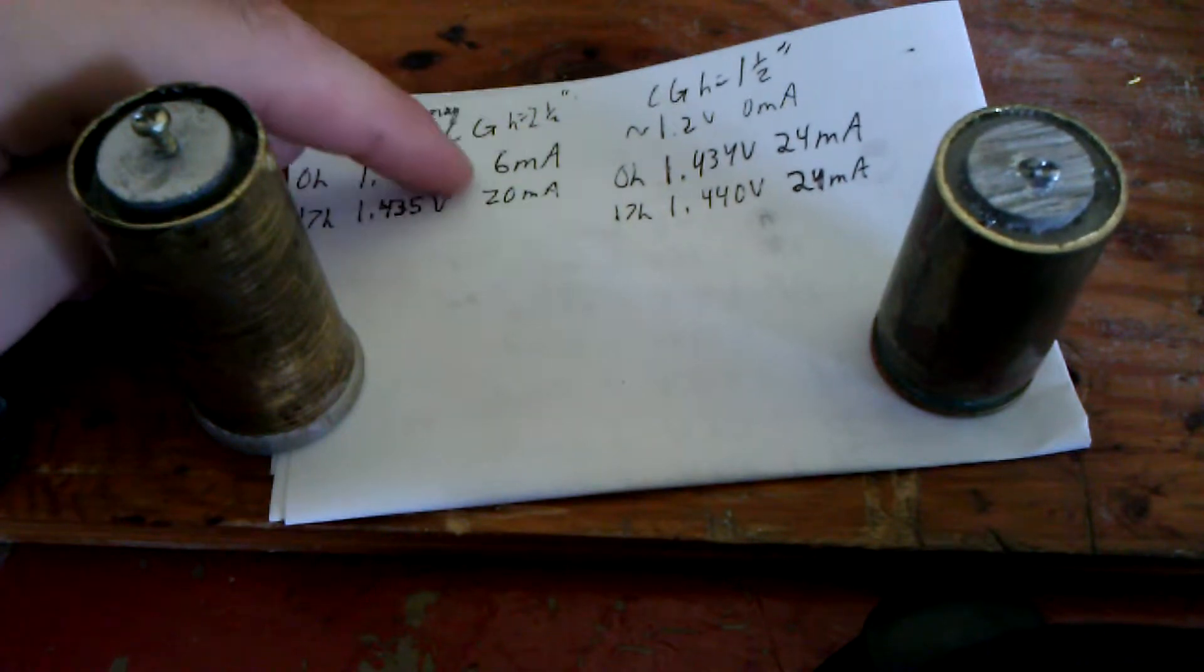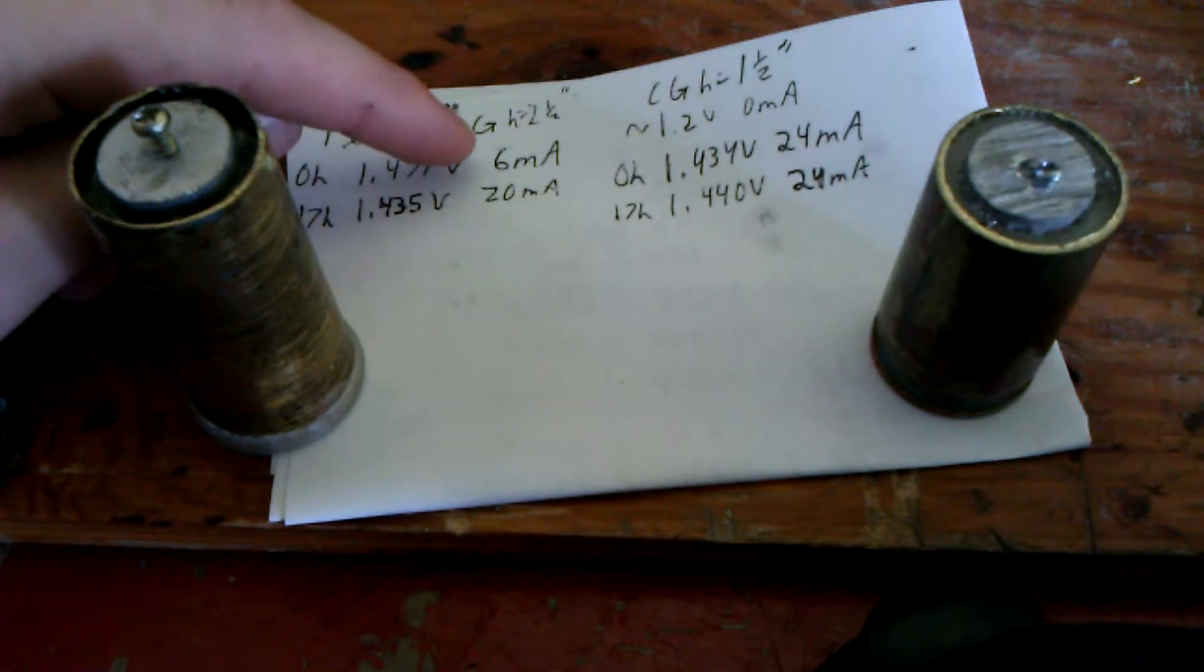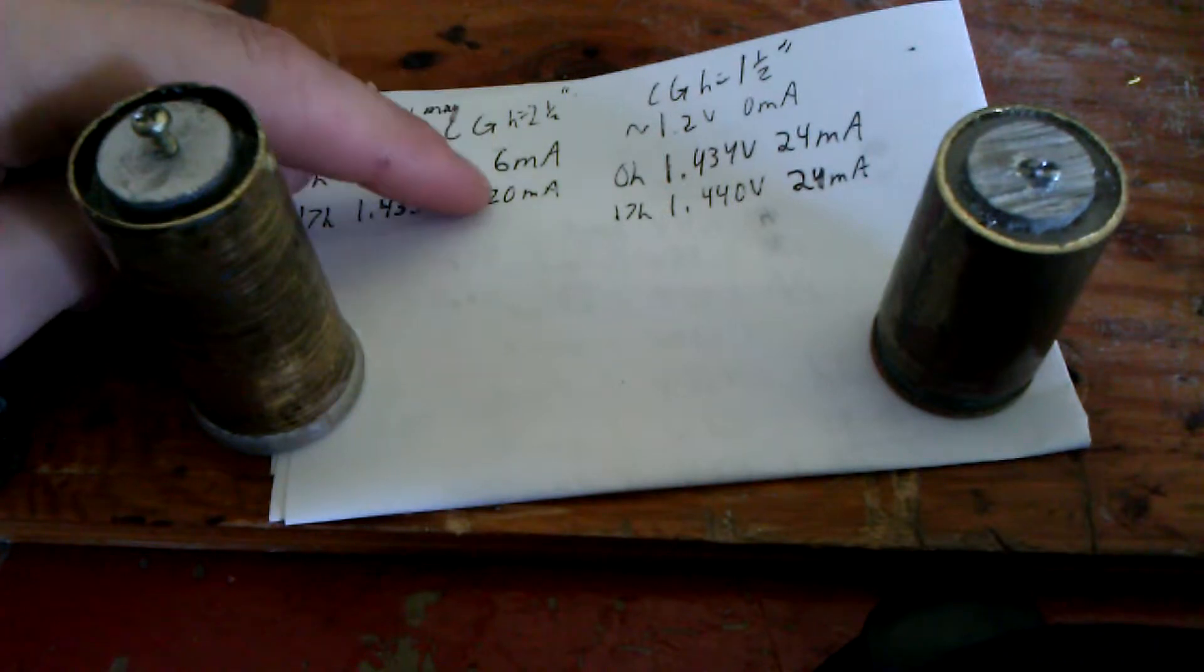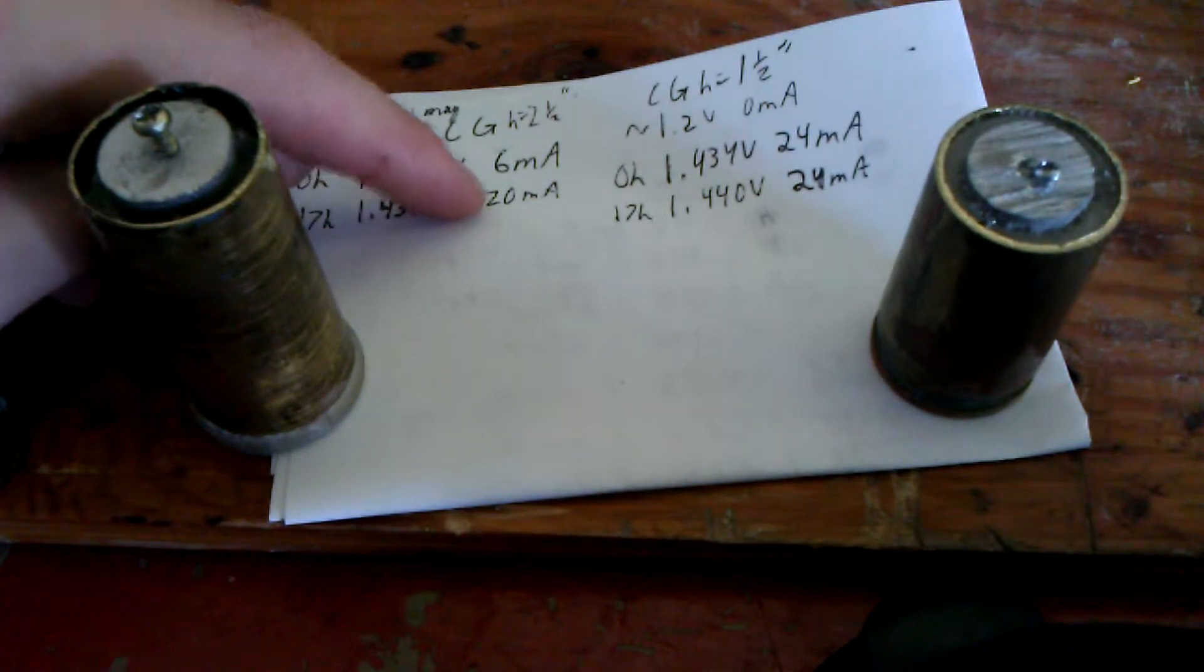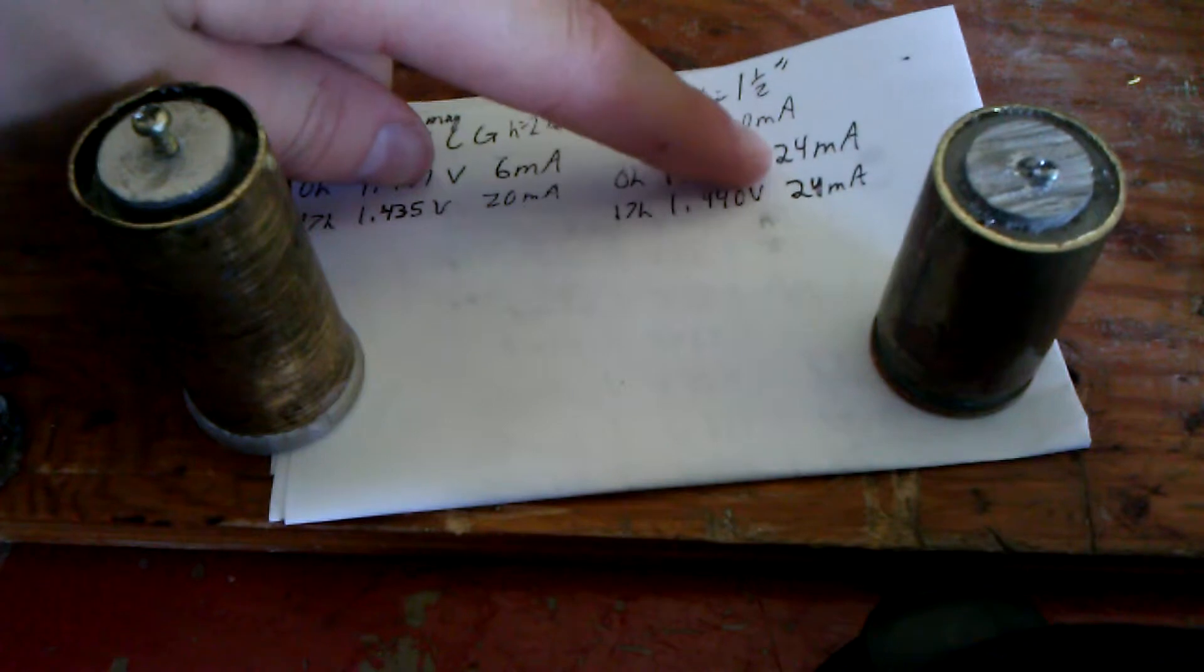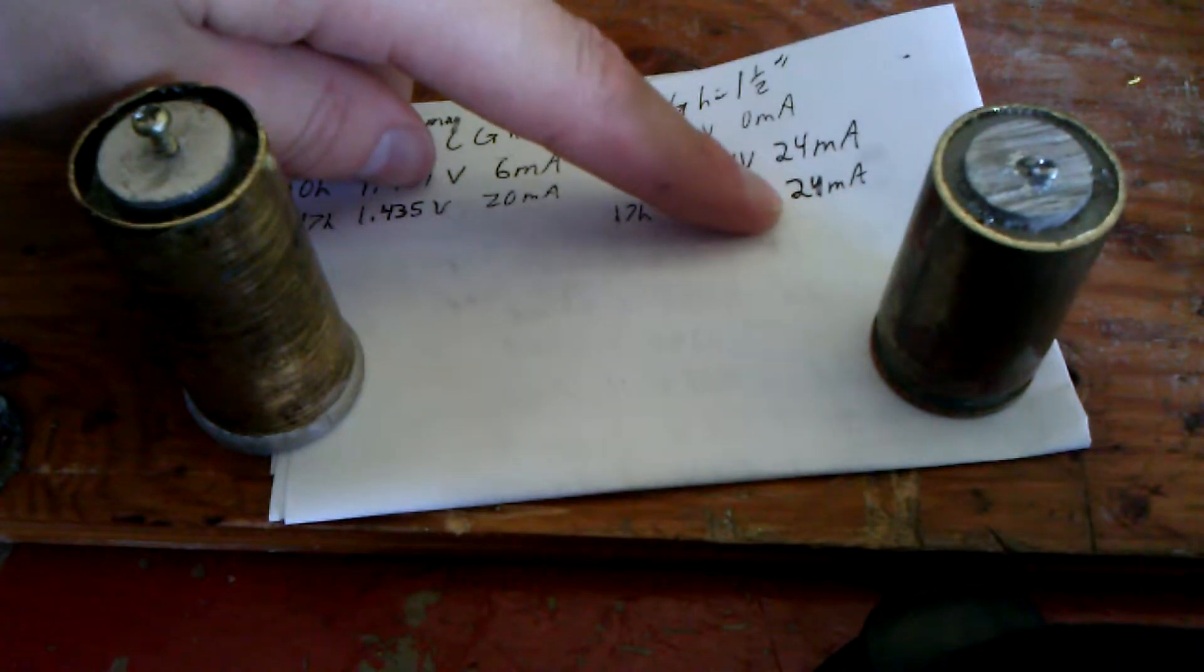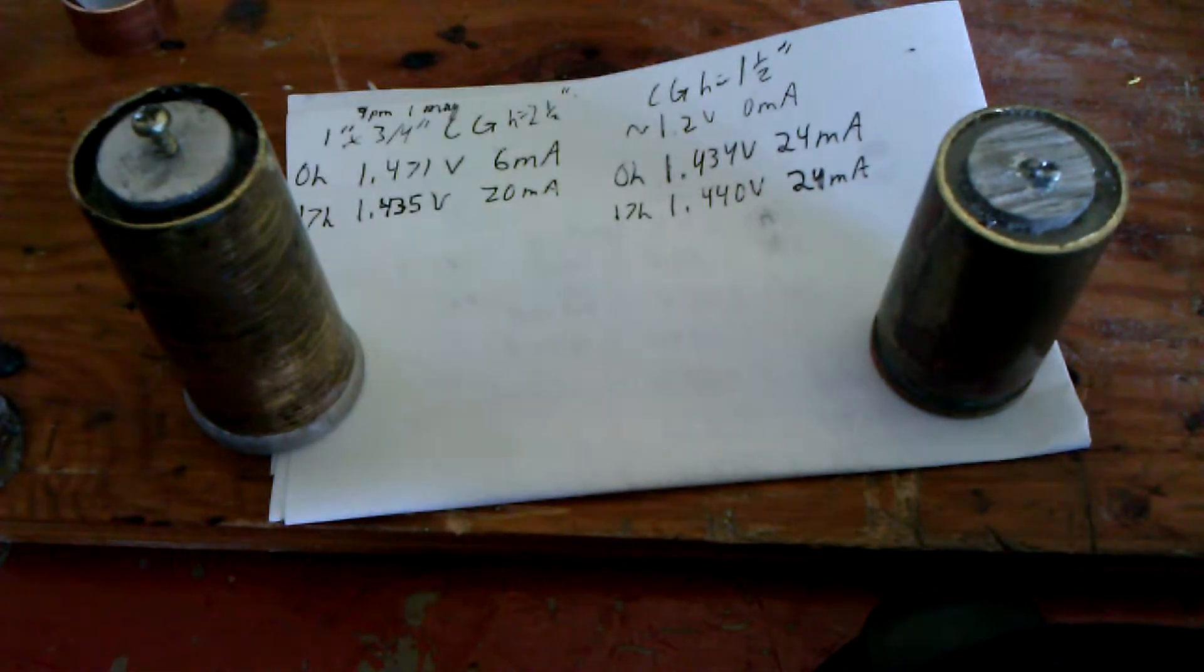Dielectric grease is supposed to hinder it for the first almost 24 hours or so, which it did in this one, and then it jumped up to 20 milliamps. Whereas this one, it immediately was at 24 and is still at 24, so it's stable.